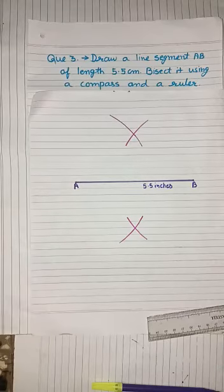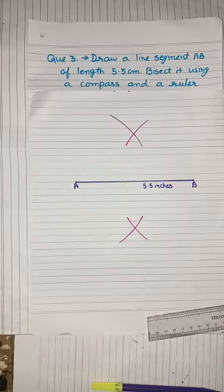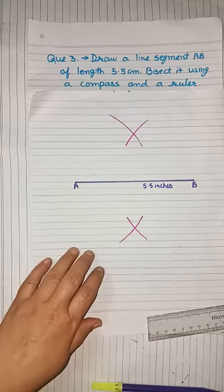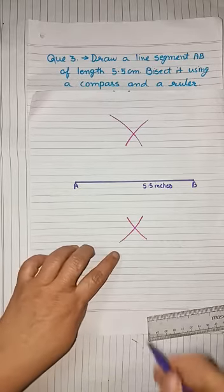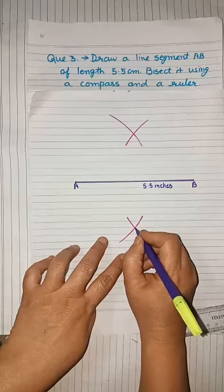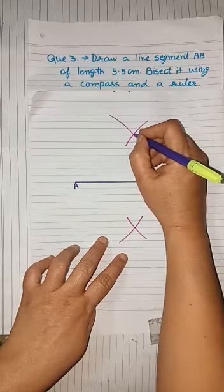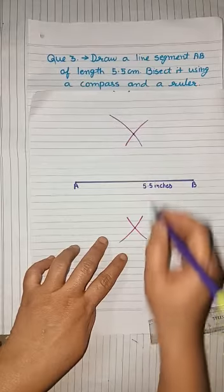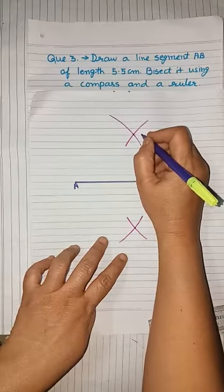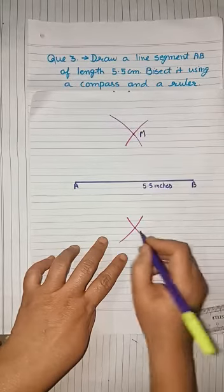Now students, therefore we get two intersected arcs, one above the line segment AB and the other below the line segment AB. Now with the help of a pencil, I am using sketch pen here, you have to mark these points as point M and point N.